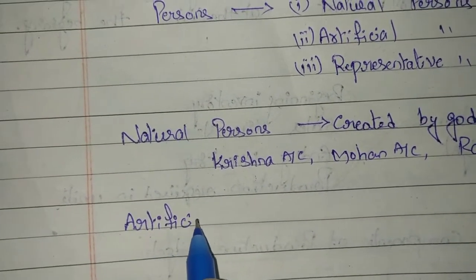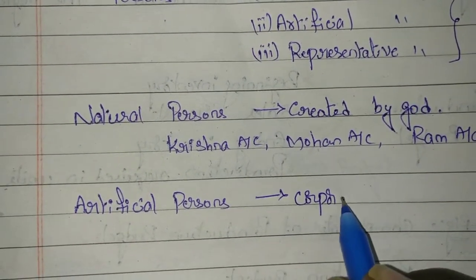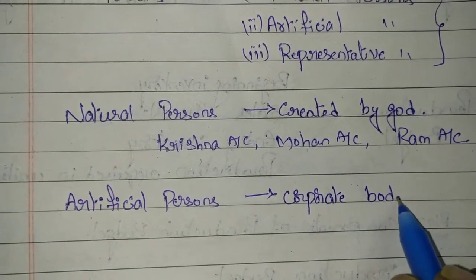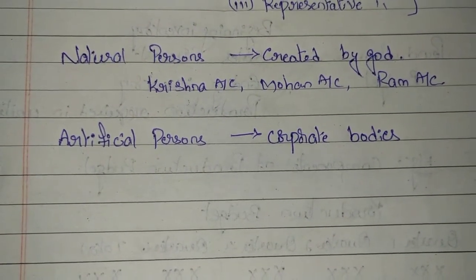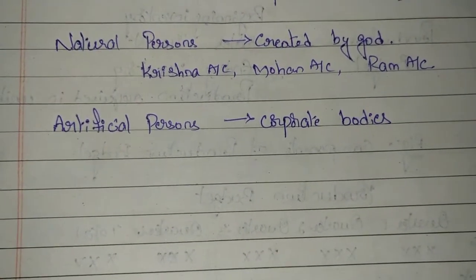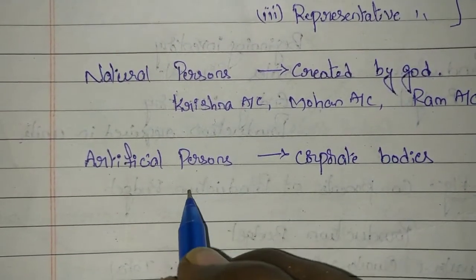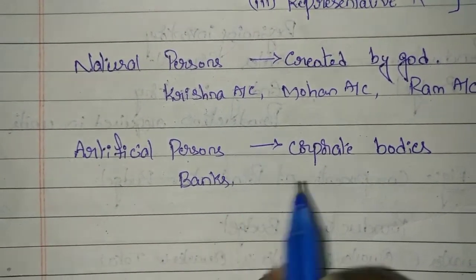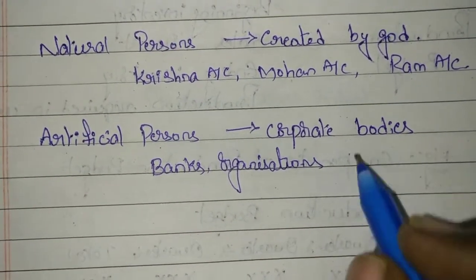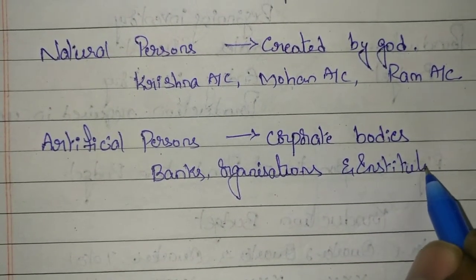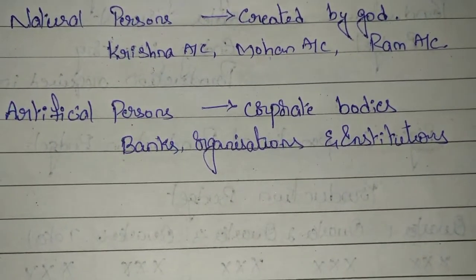The second type is artificial persons, which includes corporate bodies. Natural persons are the creation of God; artificial persons are the creation of human beings — like banks, financial institutions, or any other organizations. Things which are not natural are considered artificial persons. Artificial persons include banks, business organizations, and any other type of institutions.